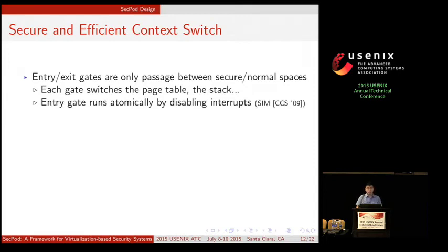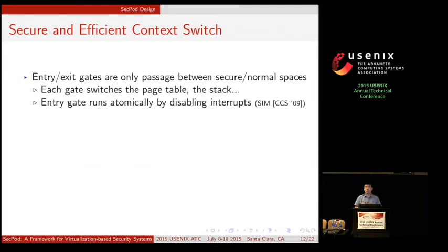With secure and efficient context switch, only requests through the gate can be forwarded to the secure space. Those gates contain code to switch the page table by loading the next page table into the CR3 register and to switch the stack. The gate also disables and re-enables interrupts. This is similar to the work presented in the SIEM system — you can refer to that paper in CCS.